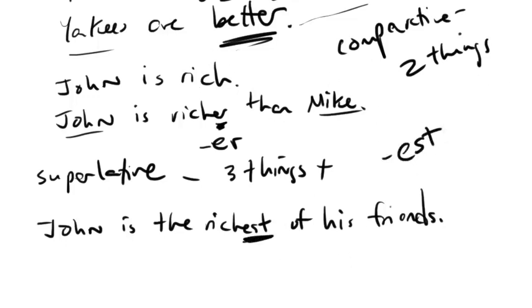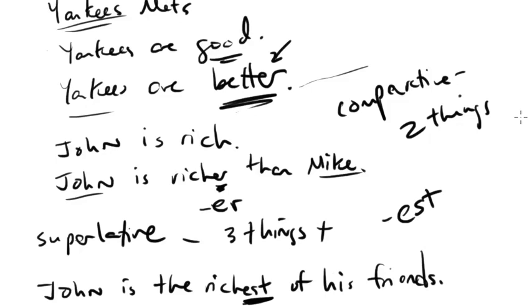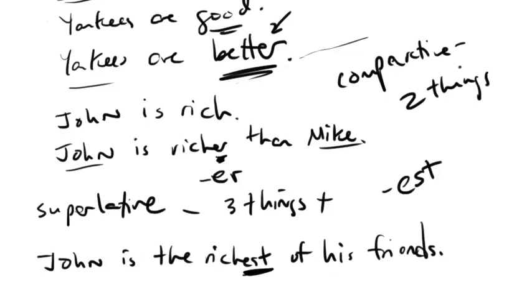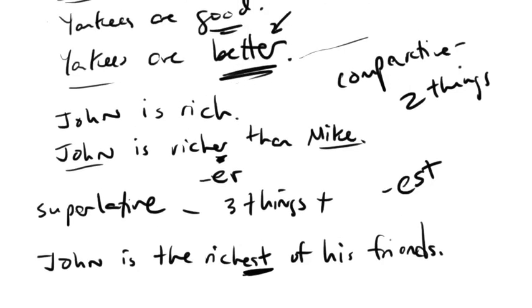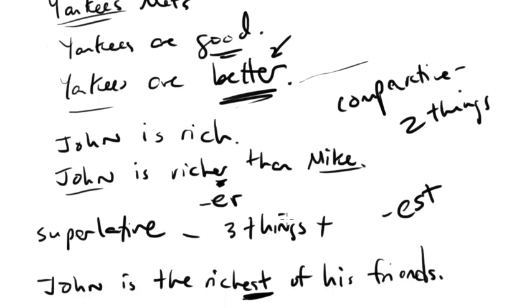Note above, if we're talking about the Yankees, it'd be the Yankees are the best team in Major League Baseball, right? Because there I'm comparing, at least implicitly, Yankees to all the other 29 or however many teams there are in the MLB, 29 other teams in the Major League Baseball. So more than two things. All right, so that's the general rule, right? You use ER when you're comparing two things, and EST when you're comparing three things.